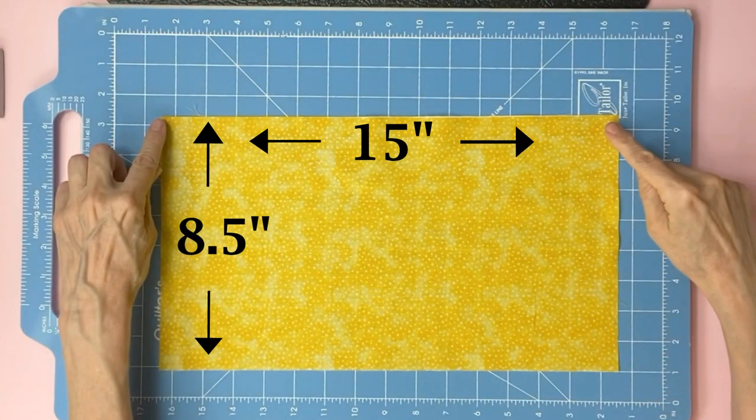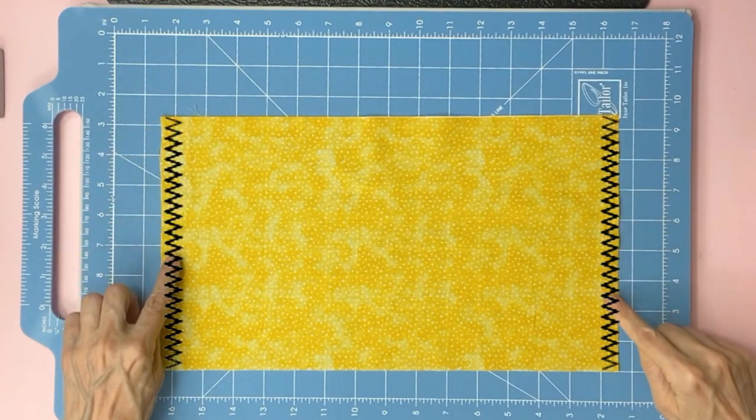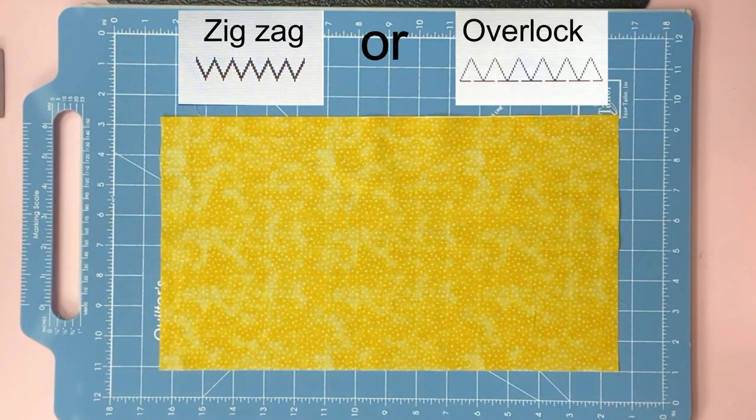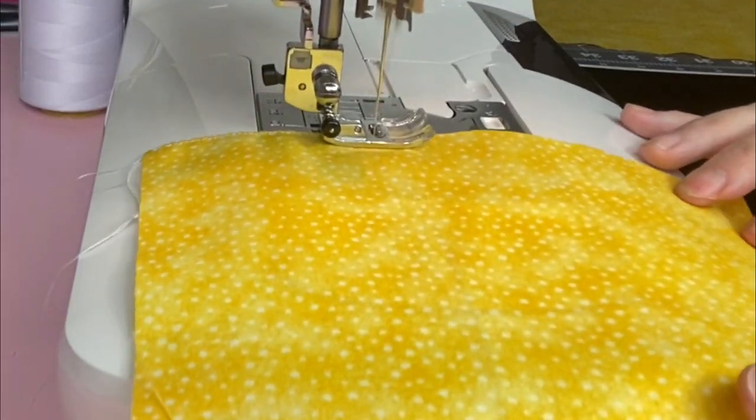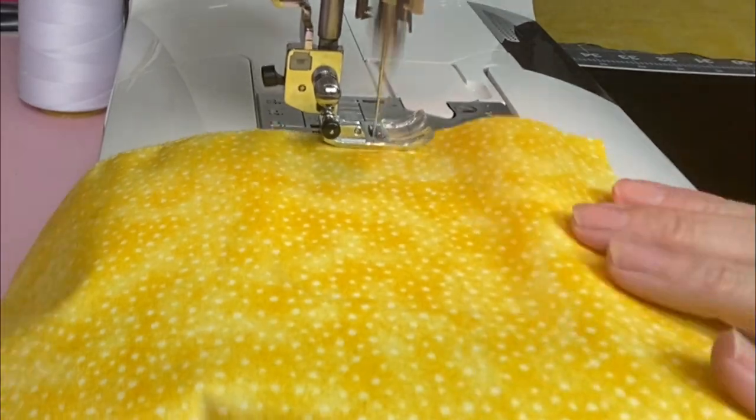Take it to the sewing machine and sew straight down using a zigzag or overlock stitch. Using a zigzag or overlock stitch will help the fabric edge from fraying.